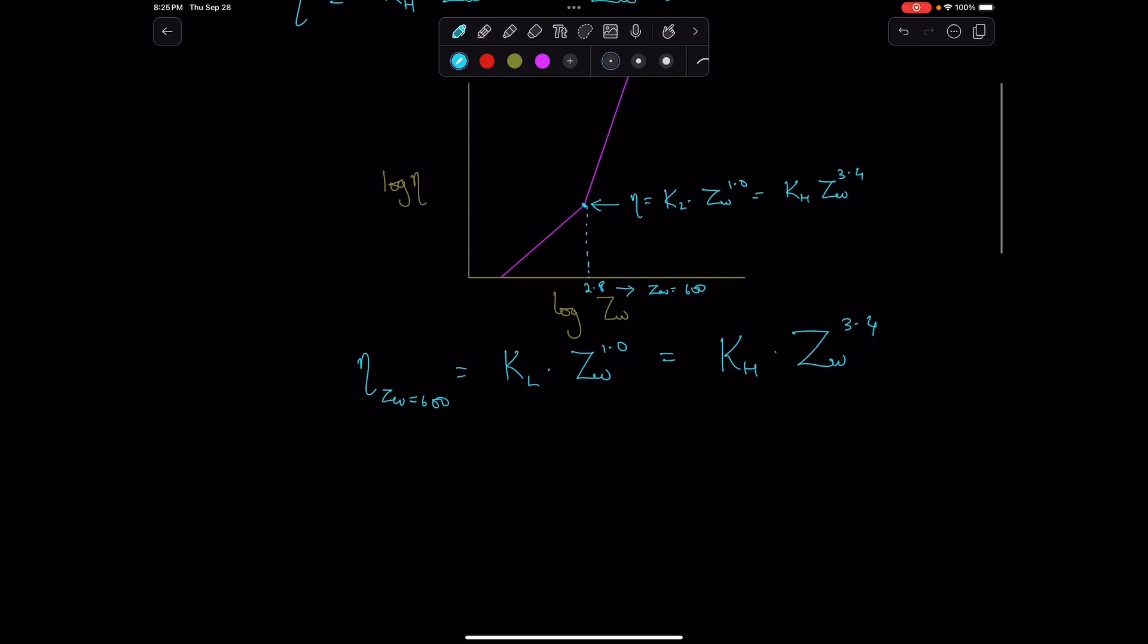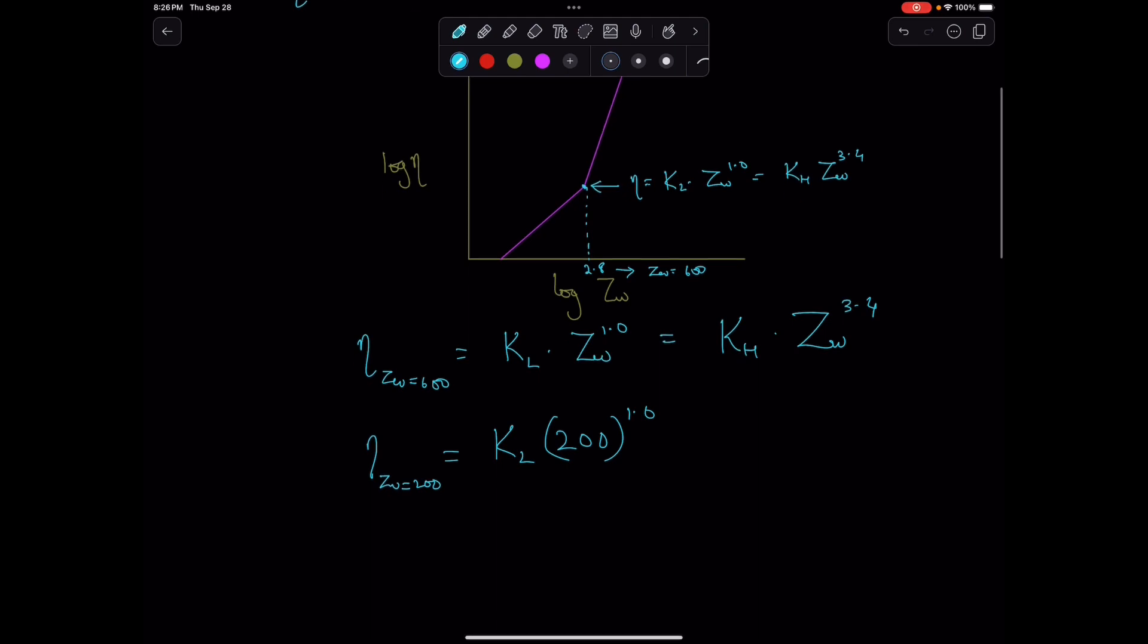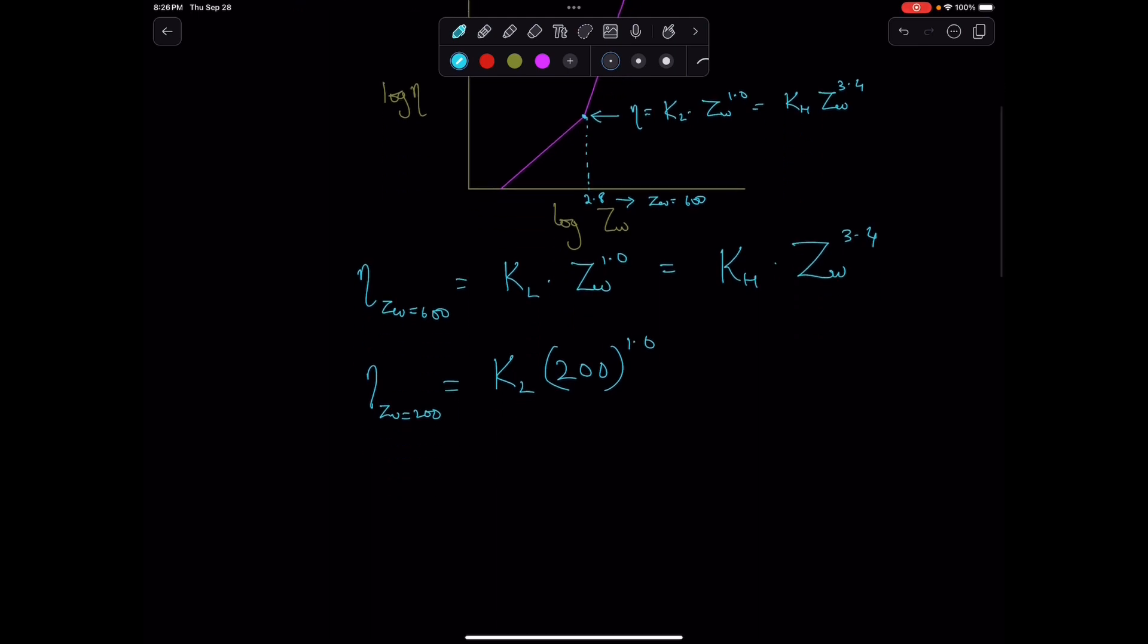We have a polymer with a ZW of 200 having a melt viscosity of 100 pascal seconds. So eta at ZW of 200 equals KL times 200 to the power 1.0, and this is 100 pascal seconds. Therefore, KL equals 0.5.